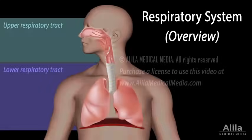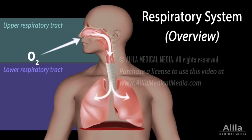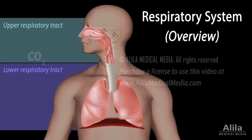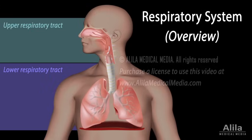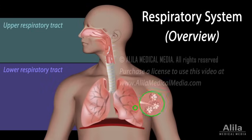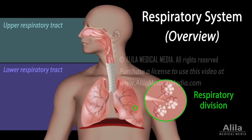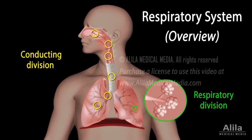The major function of the respiratory system is to exchange oxygen and carbon dioxide between the body and the environment. The gas exchange process itself takes place in the respiratory division within the lungs. The rest of the respiratory tract — the nose, pharynx, larynx, trachea, bronchi, and bronchioles — essentially serve as passageways for air to flow in and out of the lungs, and constitute the conducting division.